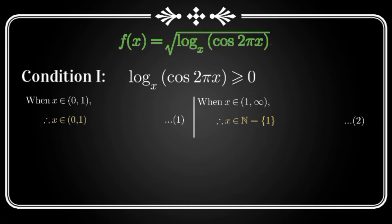Now as both these cases of x are possible, that is either x can be from 0 to 1 or x can be greater than 1, so we will take union of the results of these cases to get the final result of condition 1. So finally for condition 1 our x belongs to interval 0 to 1 or set of natural numbers except 1.